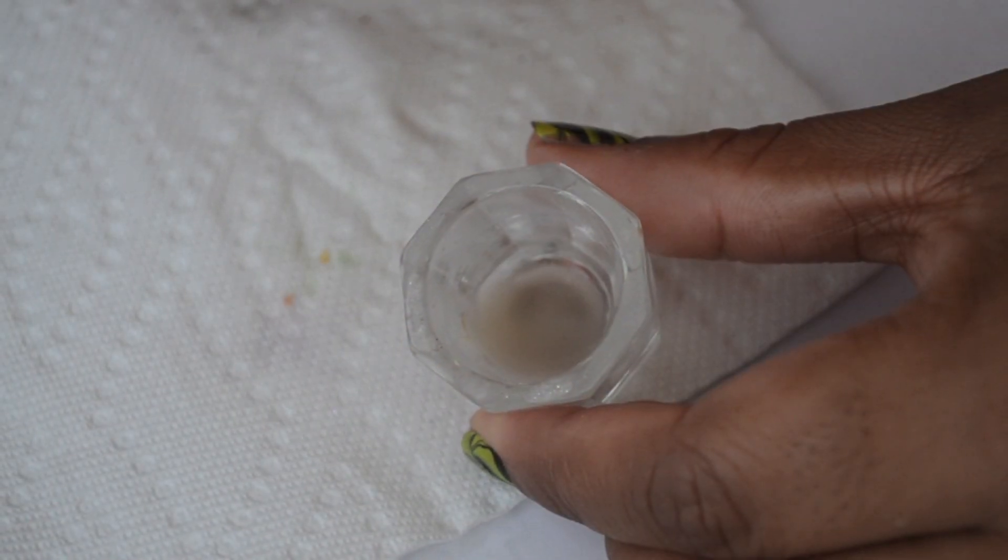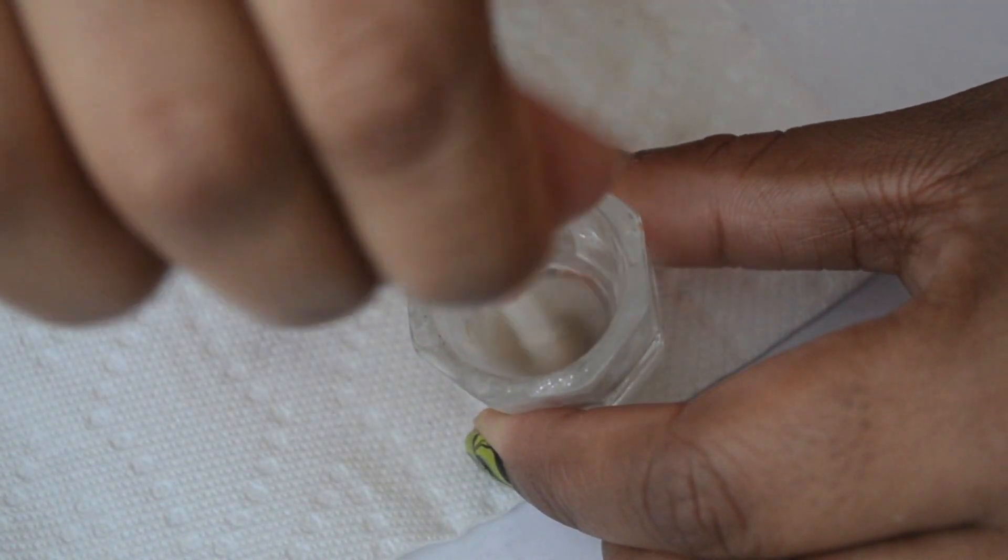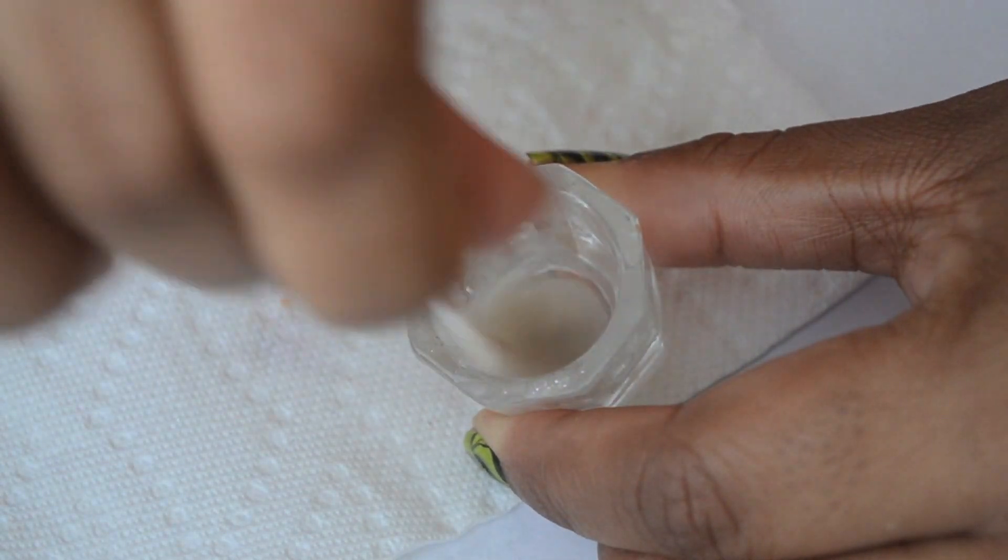Once all the tools and brushes are cleaned, the last thing I clean is the dapping dish itself. This is pretty easy.